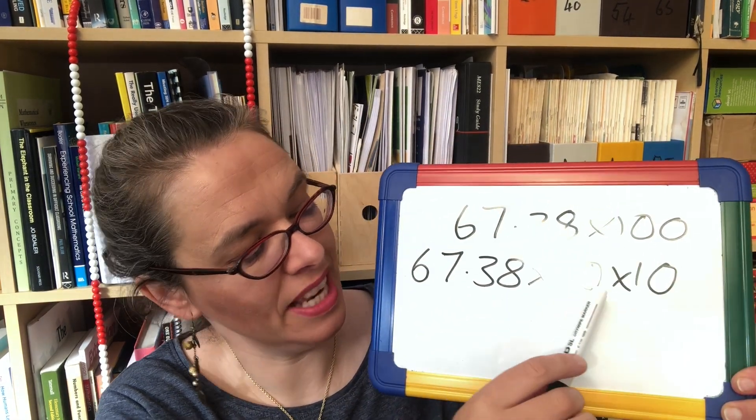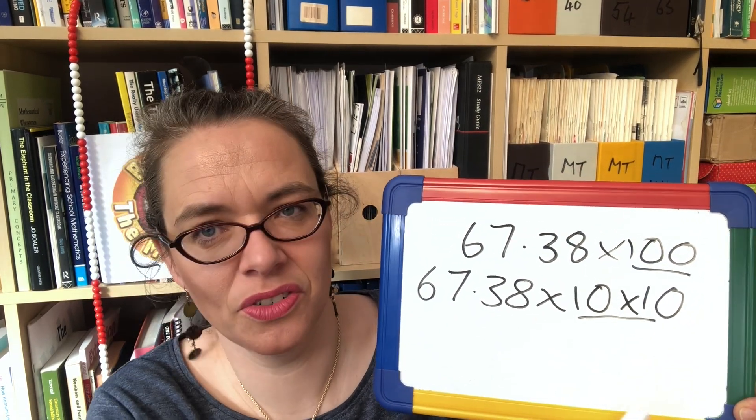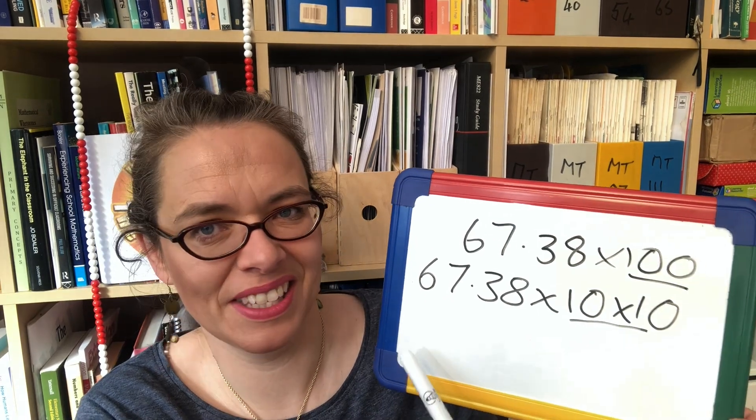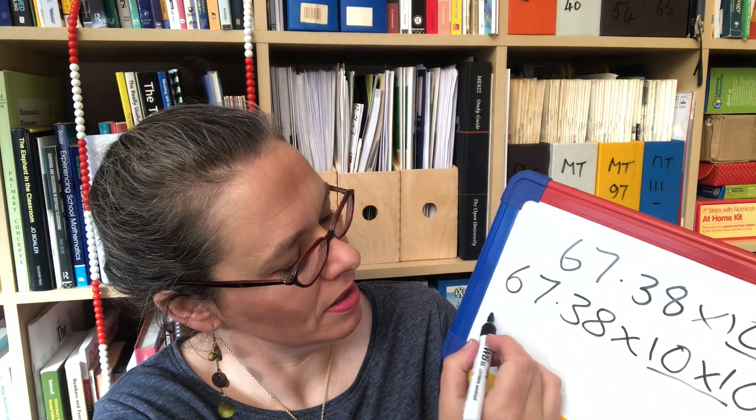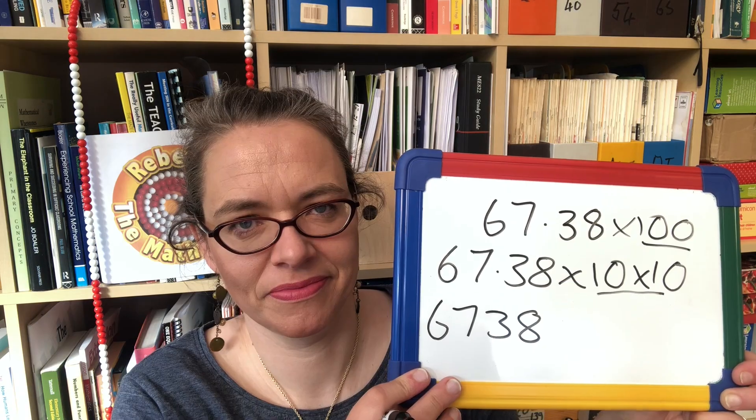Because multiplying by 10 times 10, that 10 times 10 is 100. Now we know how to multiply by 10, we move one place to the left and so if we're doing it twice we're going to move two places to the left. So that will become 67.38. The child you're working with may have other ways of thinking about multiplying by 100.